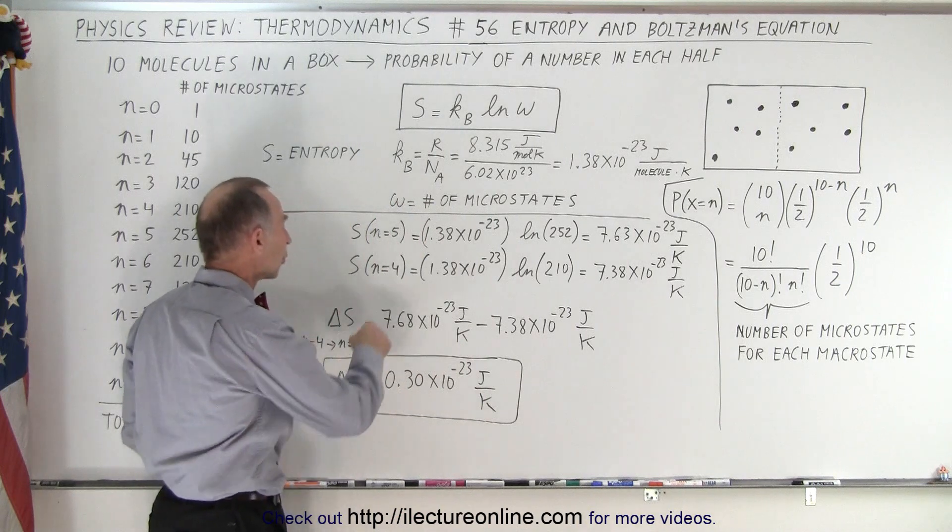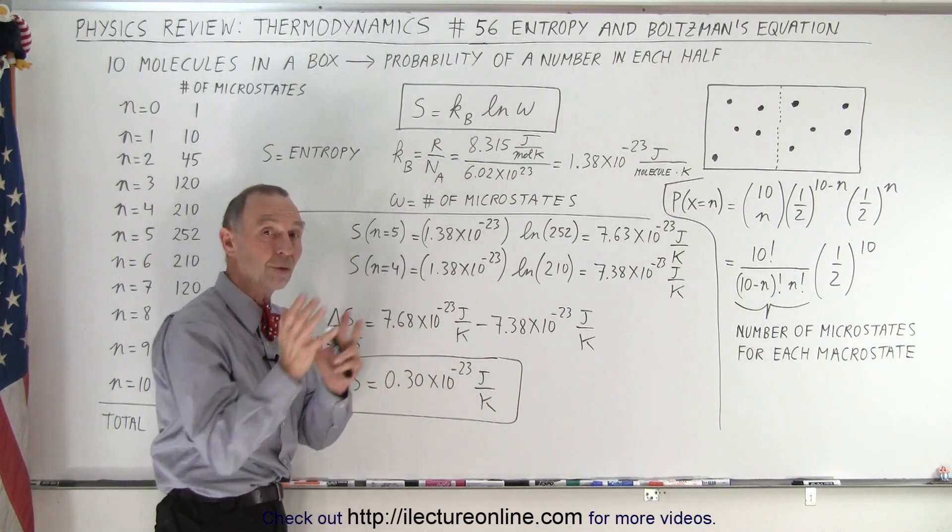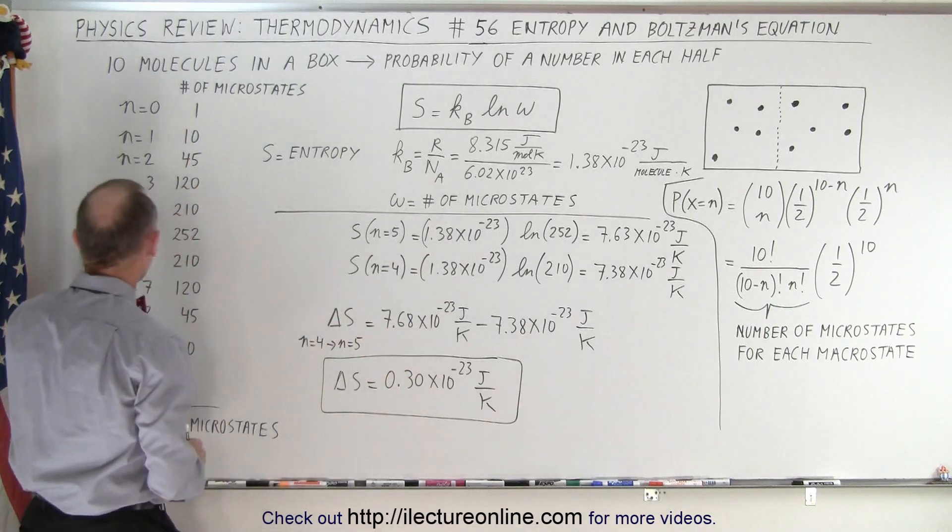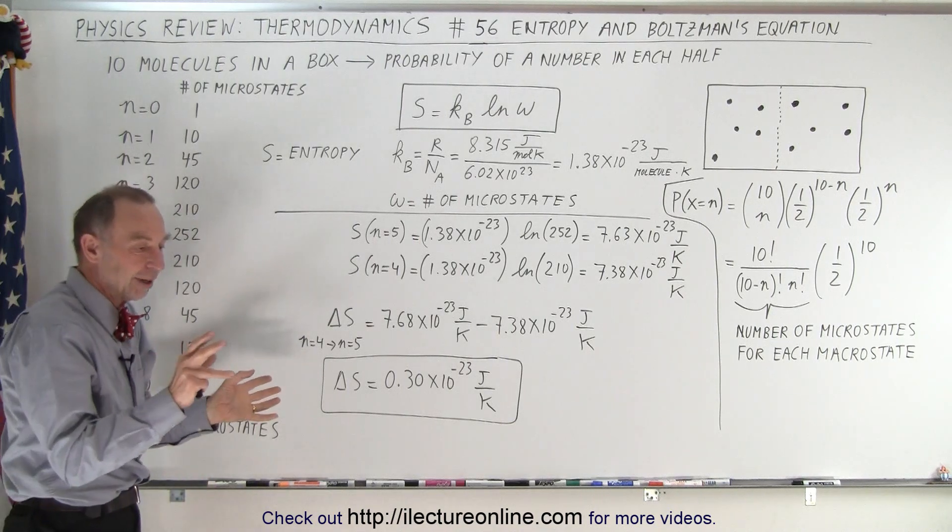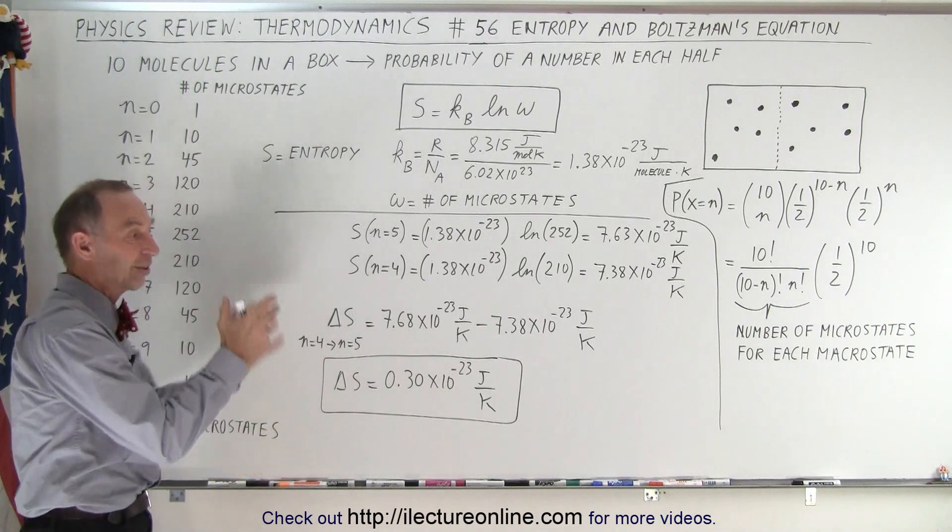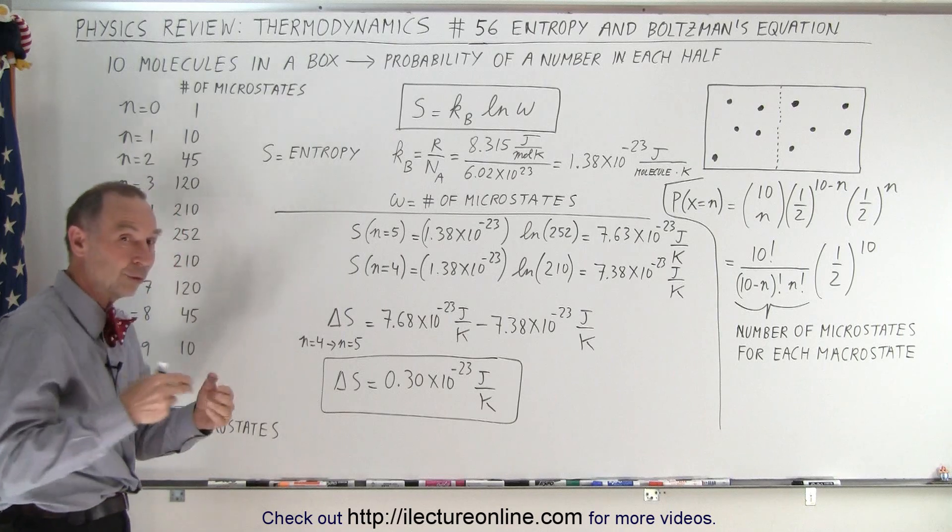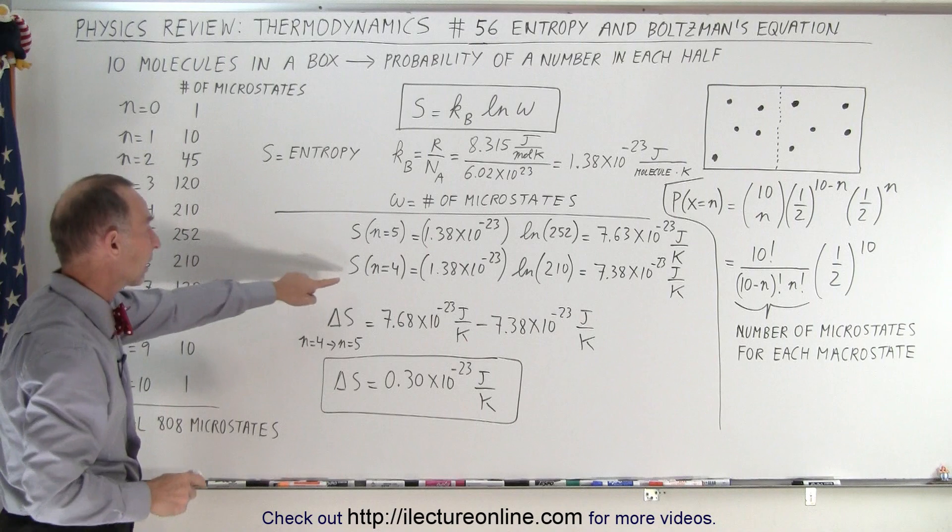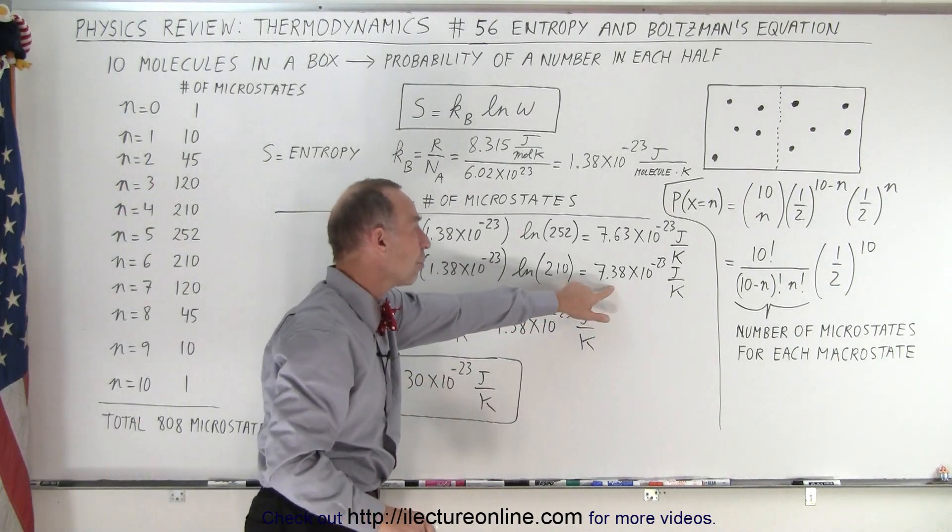If we do the same calculation for the macrostate where we have n equals 4, meaning 4 molecules on one side and 6 on the other, and that, of course, would be for one of them, right? You get the same number of microstates for n equals 6, but that's a different arrangement. That's instead of having 4 on the left and 6 on the right, you have 6 on the left and 4 on the right. So you can have both situations. Those are two different macrostates, each having 210 microstates. So when we calculate the entropy for n equals 4, we get a slightly smaller number.